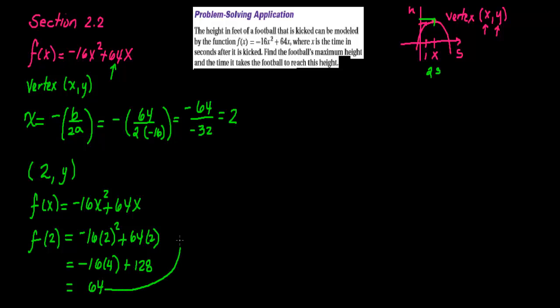So this 64 is the y-coordinate of your vertex. So here's your vertex: the vertex is 2, 64. What does this vertex tell me?